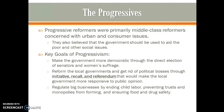First, they wanted to make the government more democratic through the direct election of senators and also giving women the right to vote — whenever you see the word 'suffrage,' think of the right to vote. They also wanted to reform local governments and get rid of political machines, or political bosses, through three key ideas called initiative, recall, and referendum, which would make local government more responsive to public opinion.